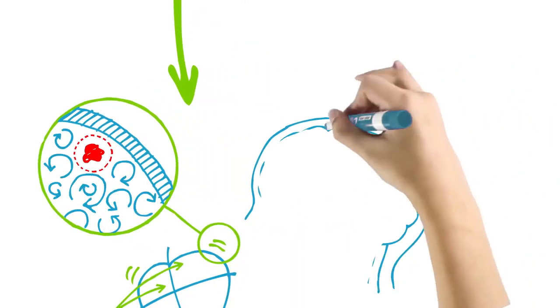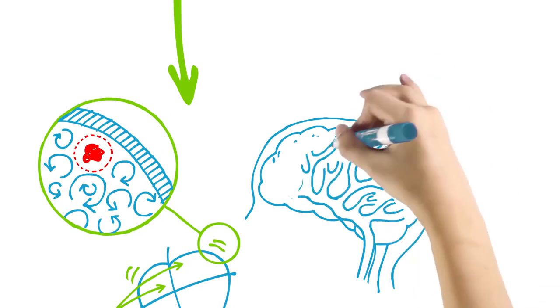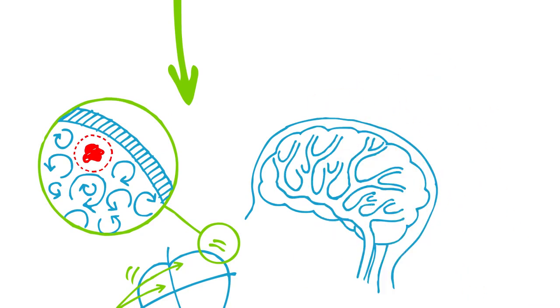If some or all of a clot then travels from the heart to the brain, it can block a blood vessel and stop the supply of oxygen to brain cells. This can result in a stroke.